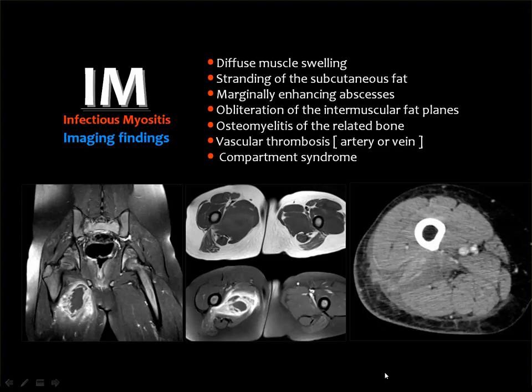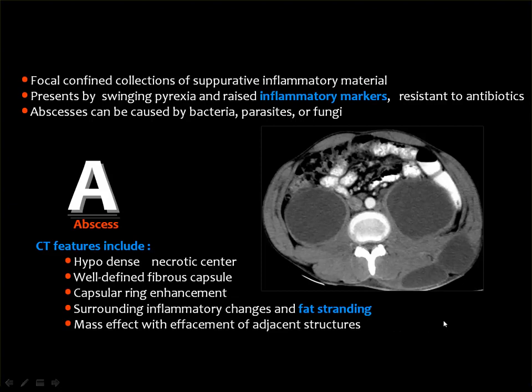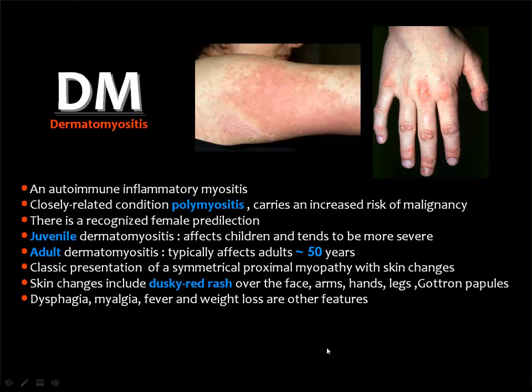In infectious myositis in a diabetic patient, inflammation of the vastus lateralis and adductor magnus muscles is not clearly seen in T1 but is well appreciated in STIR, and after contrast injection. Key findings: well-formed marginally enhancing abscesses (not present in early cases), and assessment of bone integrity. General imaging findings include diffuse muscle swelling, stranding of subcutaneous fat, marginally enhancing abscesses, obliteration of intermuscular fat planes, and if spread to bone, osteomyelitis; if affecting vessels, vascular thrombosis; if in the leg, compartment syndrome.